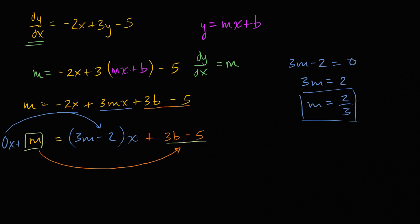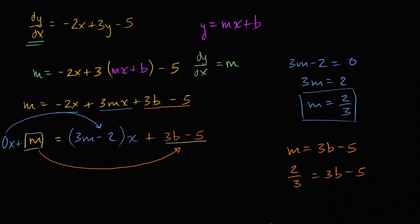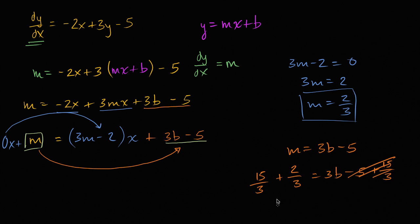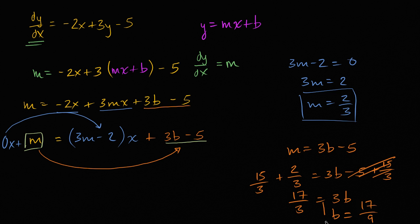Now we use that information along with m equals 3b minus 5. Since m is two thirds, we get two thirds equals 3b minus 5. Adding five to both sides — which is the same as adding fifteen thirds — gives us seventeen thirds on the left equals 3b. Dividing both sides by three, we get b equals seventeen over nine.